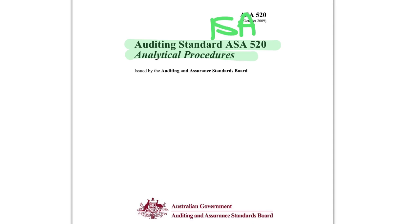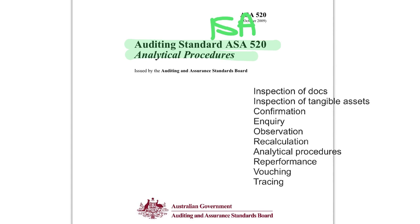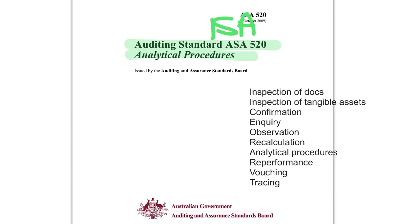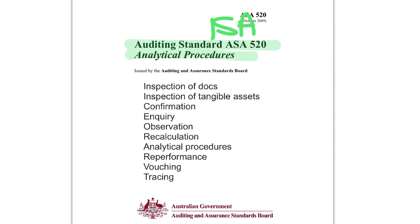From a previous video on ASA 500 on audit evidence, we have a large range of procedures that the standard talks about: inspection of documents, tangible assets, confirmation, inquiry, observation, recalculation,